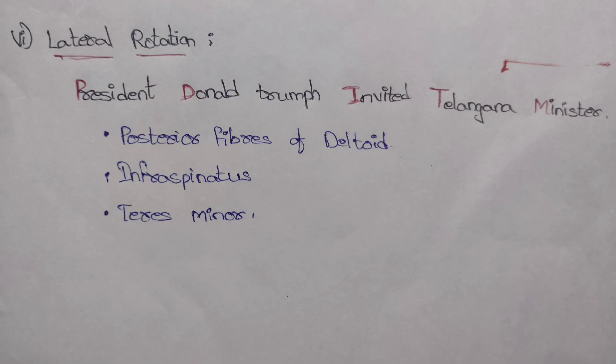The final movement is lateral rotation. The mnemonic is 'president Ronald Trump invited Telangana minister': P for posterior fibers of deltoid muscle, I for infraspinatus, and Telangana minister for teres minor.